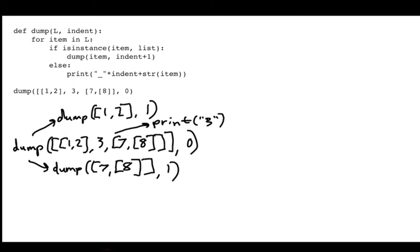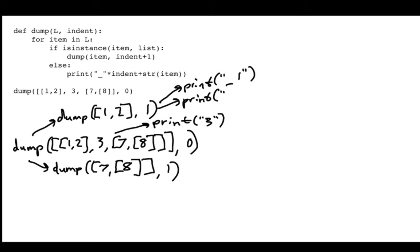For dump([1,2], 1): I loop over item=1 then item=2. In both cases it's not a list, so I print. The indent level is 1, so I print one underscore before each. I'm going to print '_1' and then '_2'. The more underscores printed, the deeper in the nested structure — 3 is directly in the top list, while 1 and 2 are in a list inside a list, which is why they have one underscore.